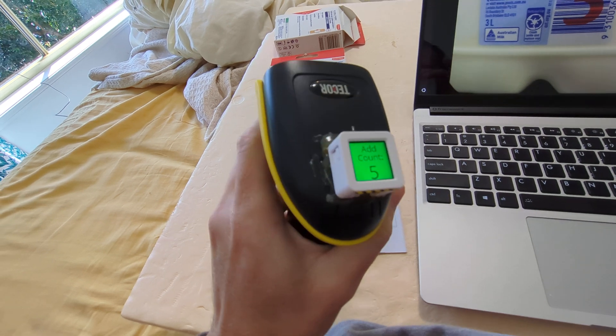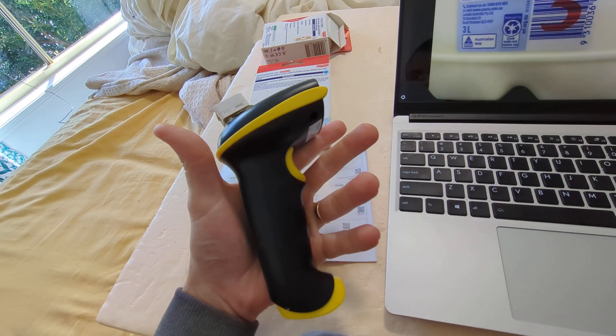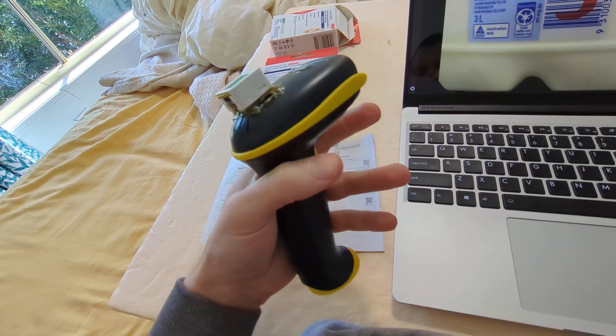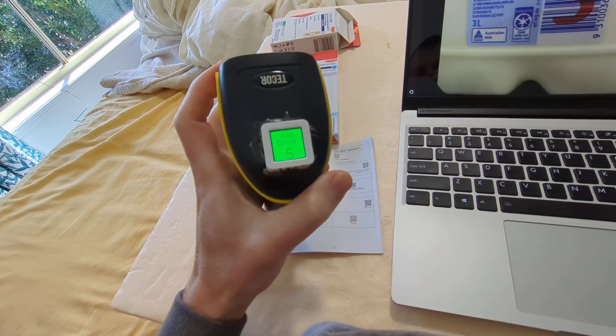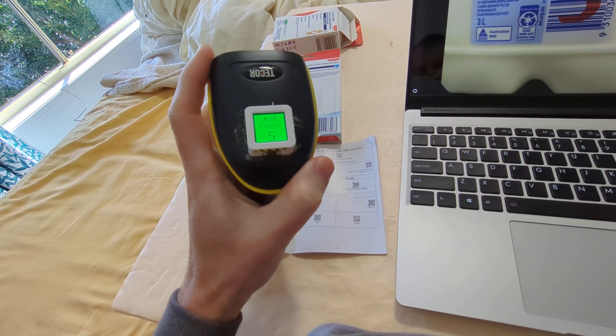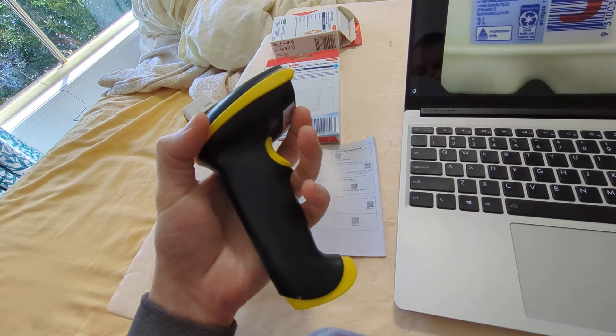That required a change in the configuration of the barcode scanner. Now it turns out there's two different configuration sets in here. There's the one on the carrier board and then there's one in the module itself. And because we are looking at the output from the module itself, changing the configuration on the carrier board does nothing for us.